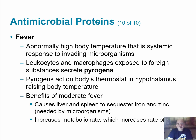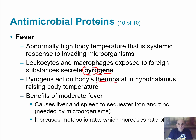Finally, fever is an abnormally high body temperature that is a systemic response to invading microorganisms. When a leukocyte or macrophage is exposed to a foreign substance, they release substances called pyrogens — 'pyro' referring to fire, indicating heat. These pyrogens travel to the hypothalamus, where thermoregulatory centers act as a thermostat, raising body temperature.